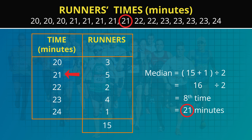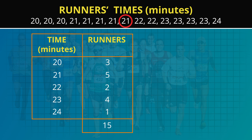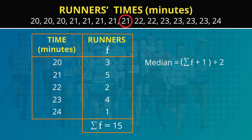Let's write that with math symbols. The number of runners is called the frequency, and we use the letter F for the frequency. If we add all the frequencies, we get the total number of runners — we write that as sigma F, because sigma means to add. The rule to find the median is sigma F plus 1, then divide by 2. This tells us where to find the median, so we go back to the data and see that the eighth time is 21 minutes.